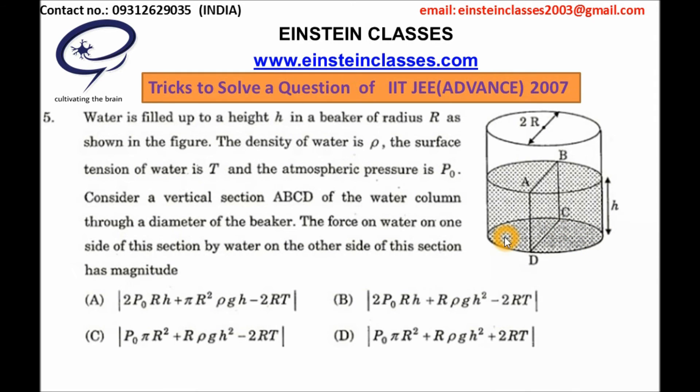Because at the base, pressure at each point will be ρgh and hence the force exerted by this water column at the base will be ρgh into πR² where πR² is the area of the base. That means this is the force exerted by the water column at the base. It cannot be the force exerted by the water column at section ABCD, and hence this option will be eliminated and the remaining option which can be correct will be B. Hence the correct option will be B.